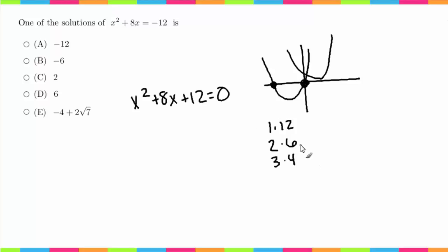Since this is positive, these numbers have to either both be positive or both be negative. In this case, they're positive because our middle term is positive. The only combination that when added together gives me 8 is 2 and 6. So I know this factors to (x + 2)(x + 6) = 0.